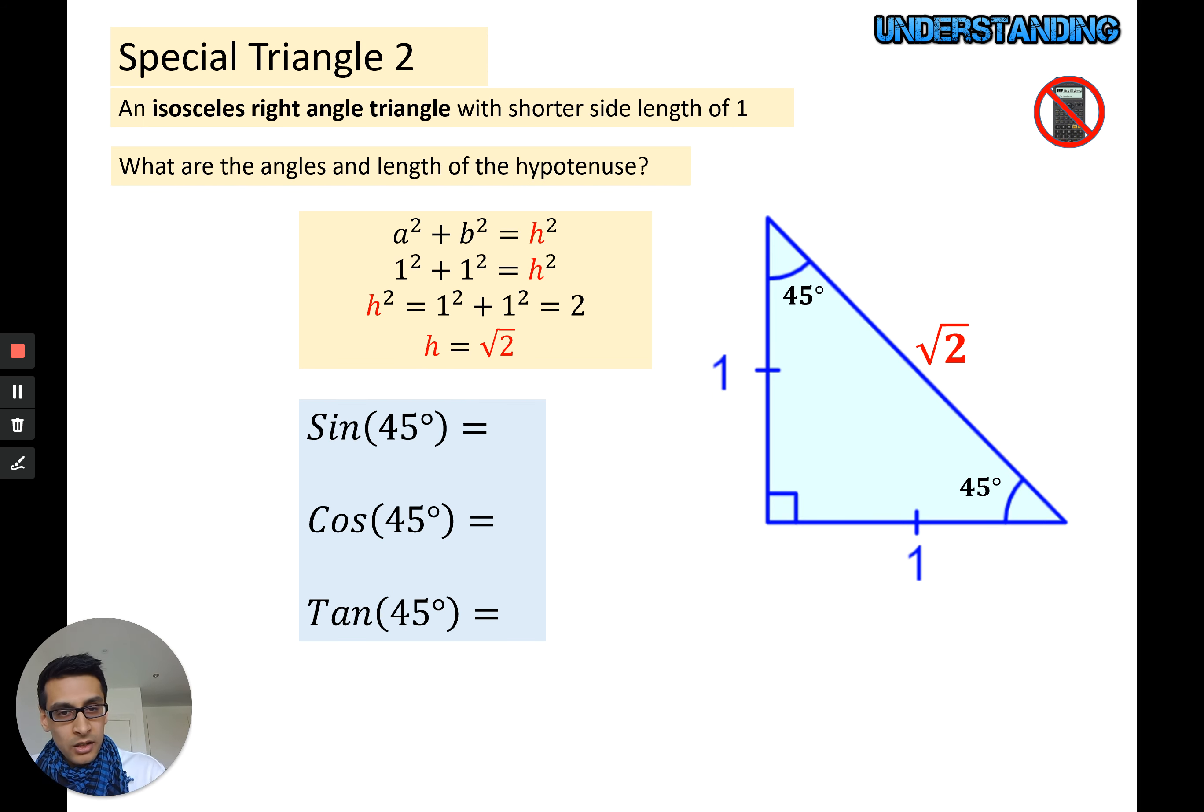Pause the video again and then work out what those are. You don't have to write these neatly in your book yet, I have the table coming up. Okay, so now you should have these following values: 1 over root 2, 1 over root 2, and 1.